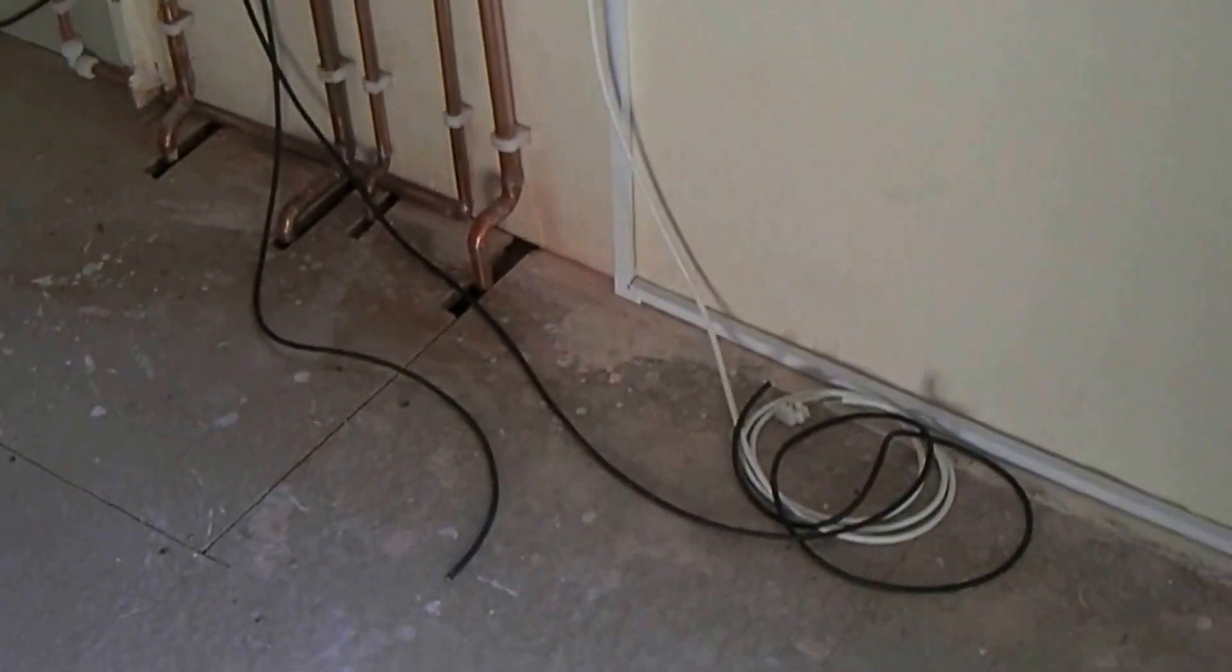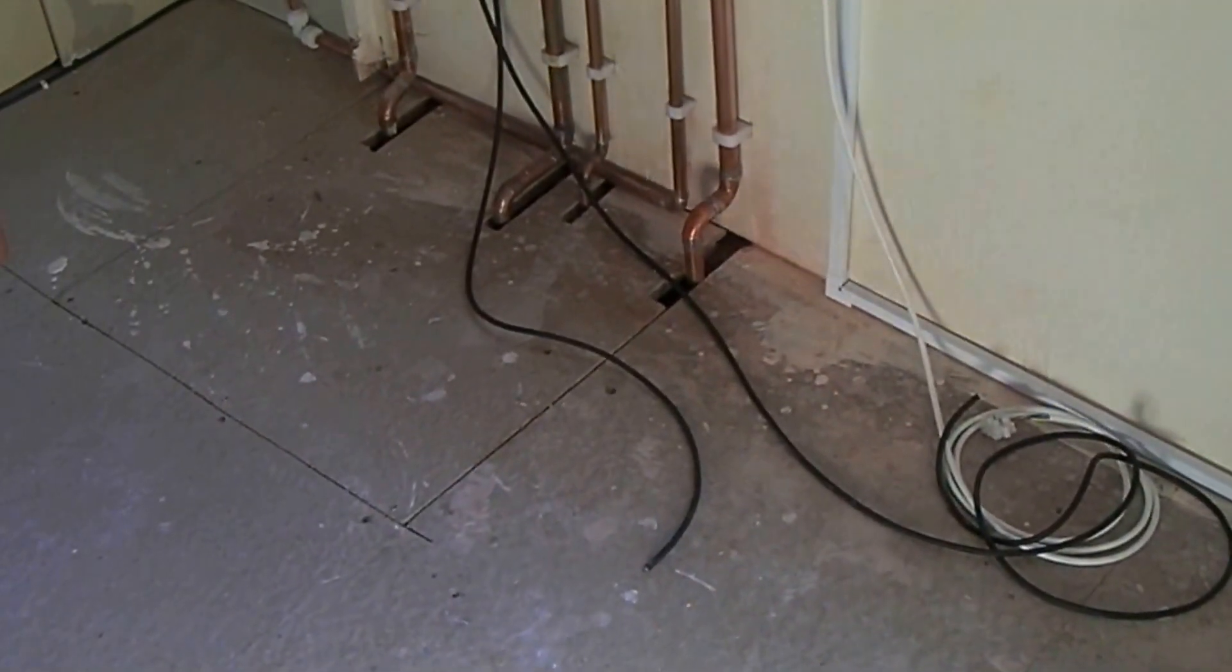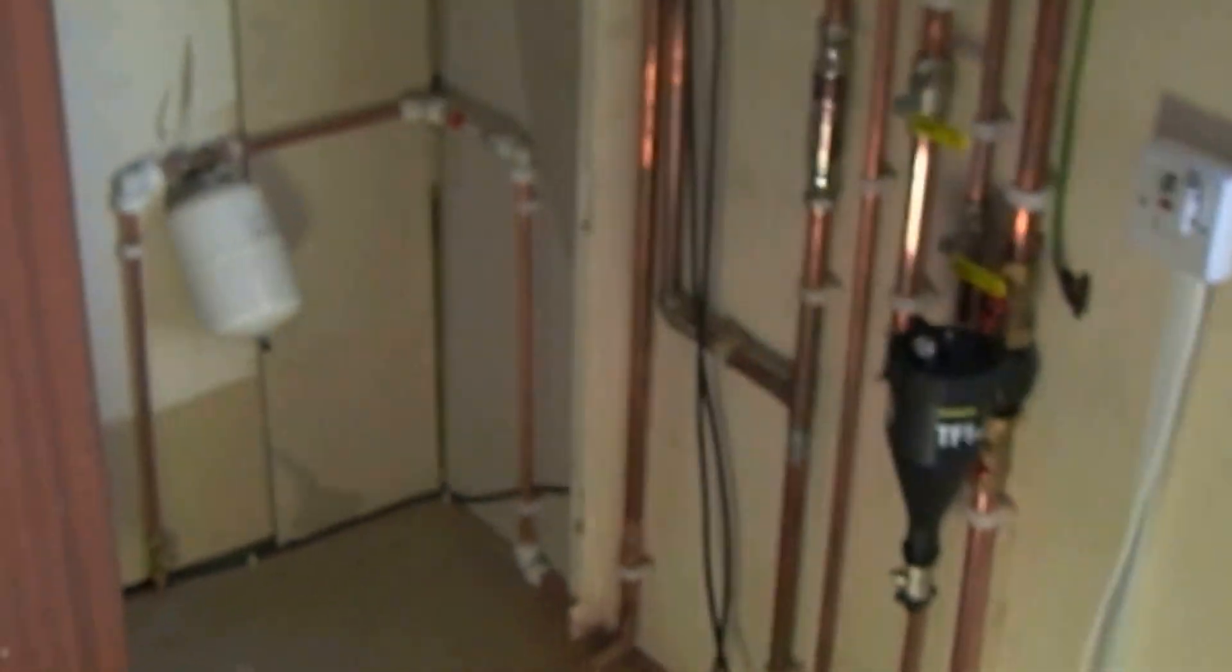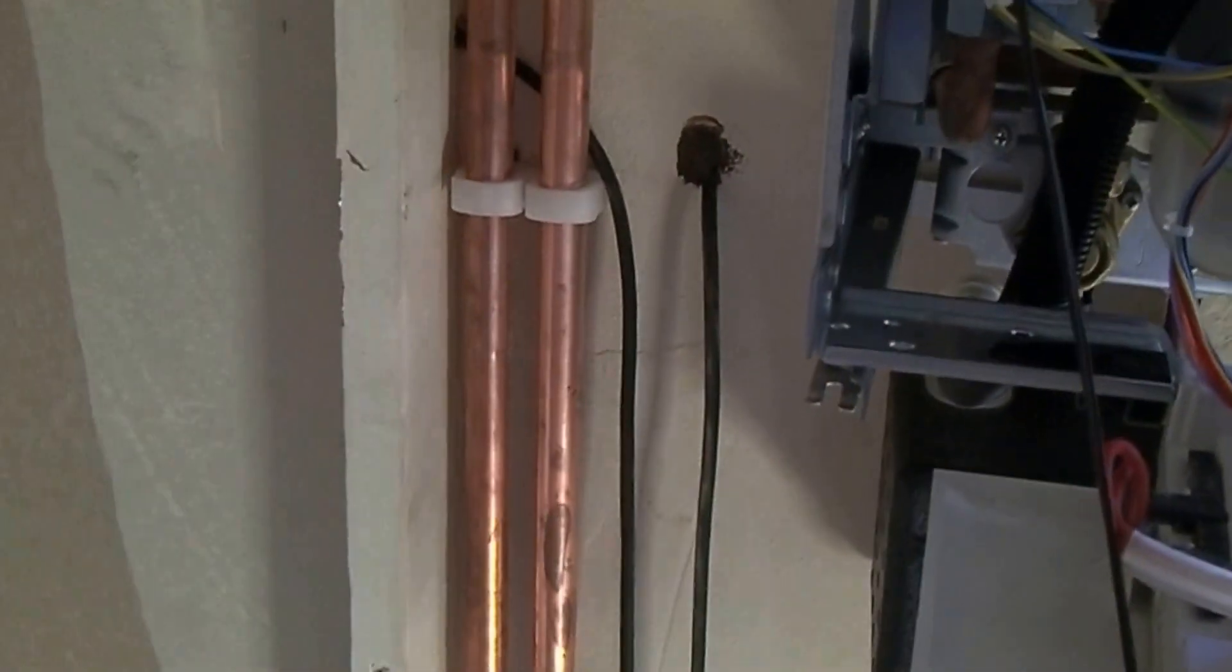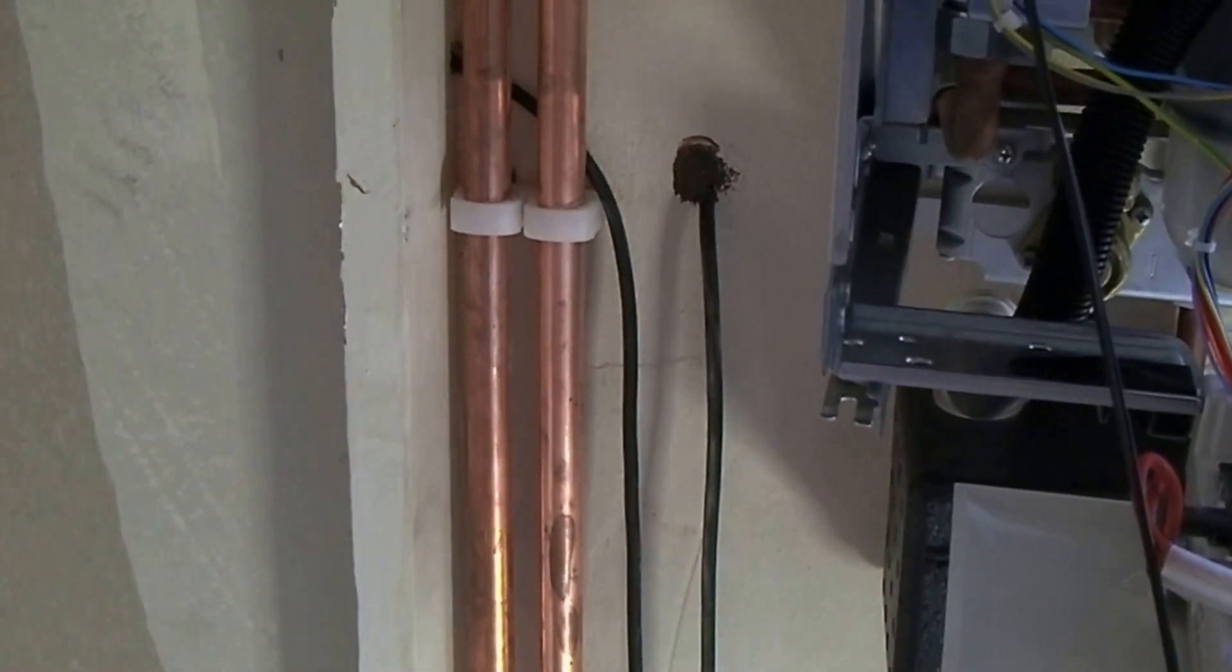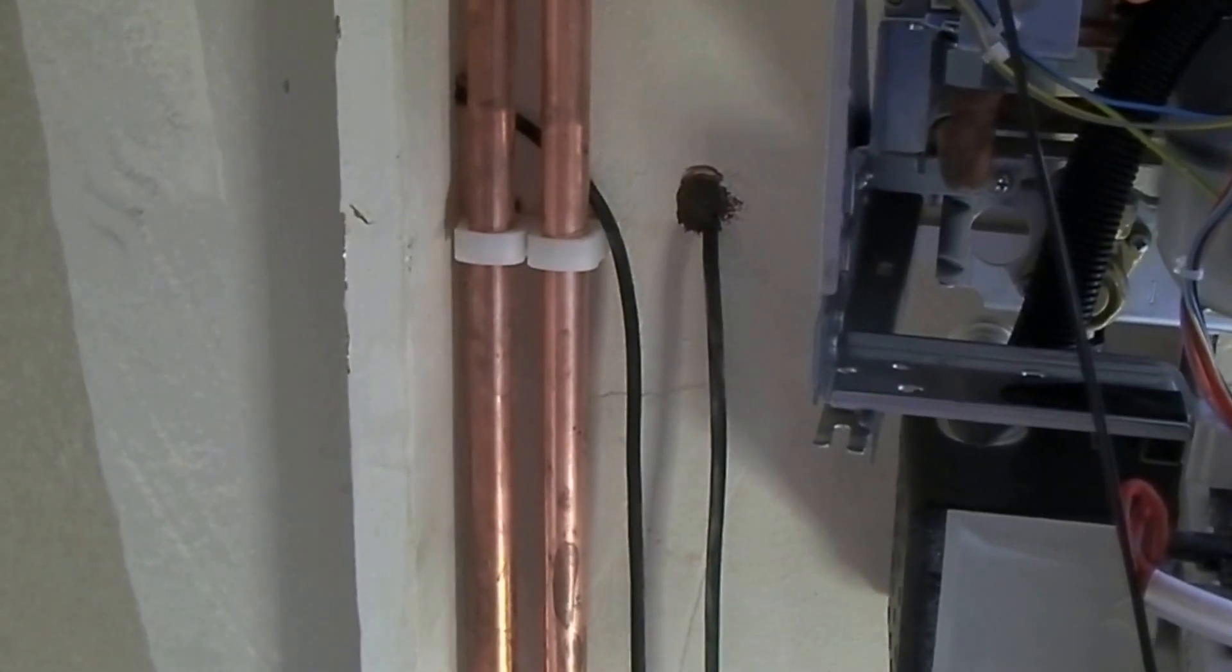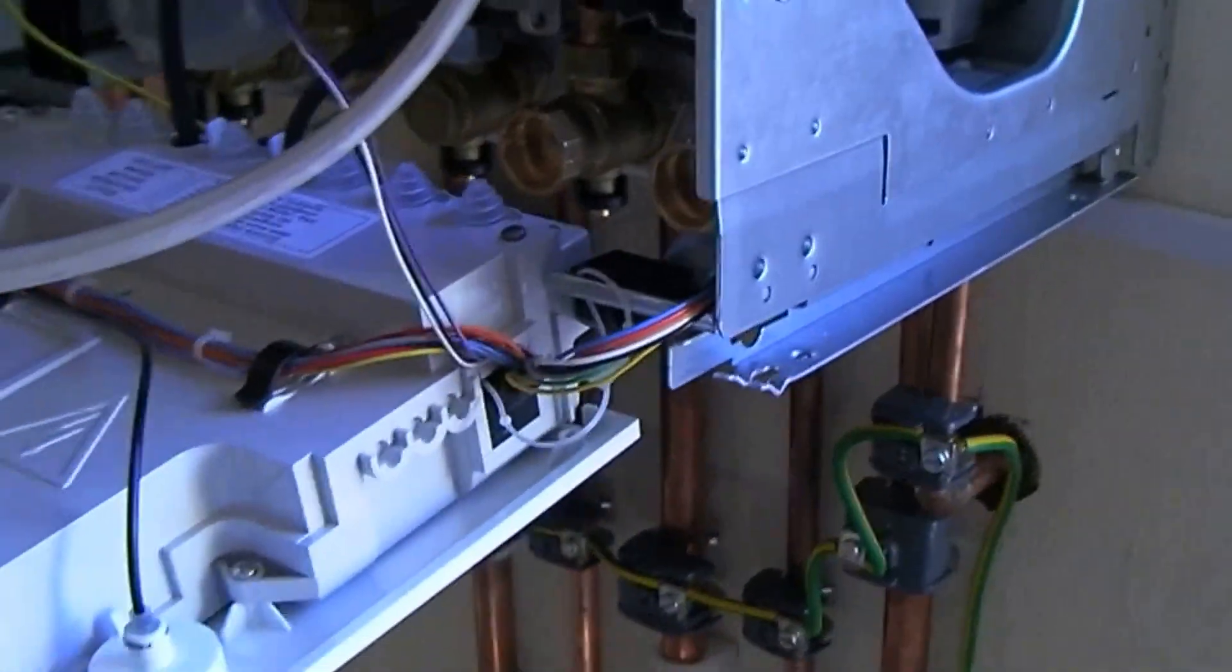Those two black wires—one is coming from the thermostats, the room controller which is on the other side there, and the other one is going through the wall and runs down onto our north-facing front wall where the FW100 exterior sensor is going to be fitted.